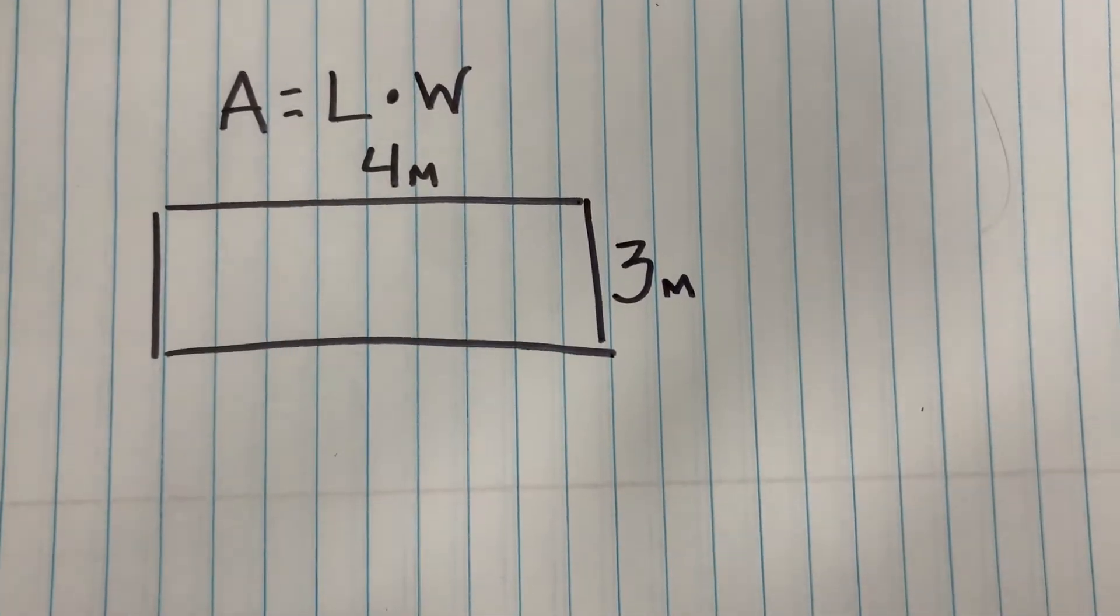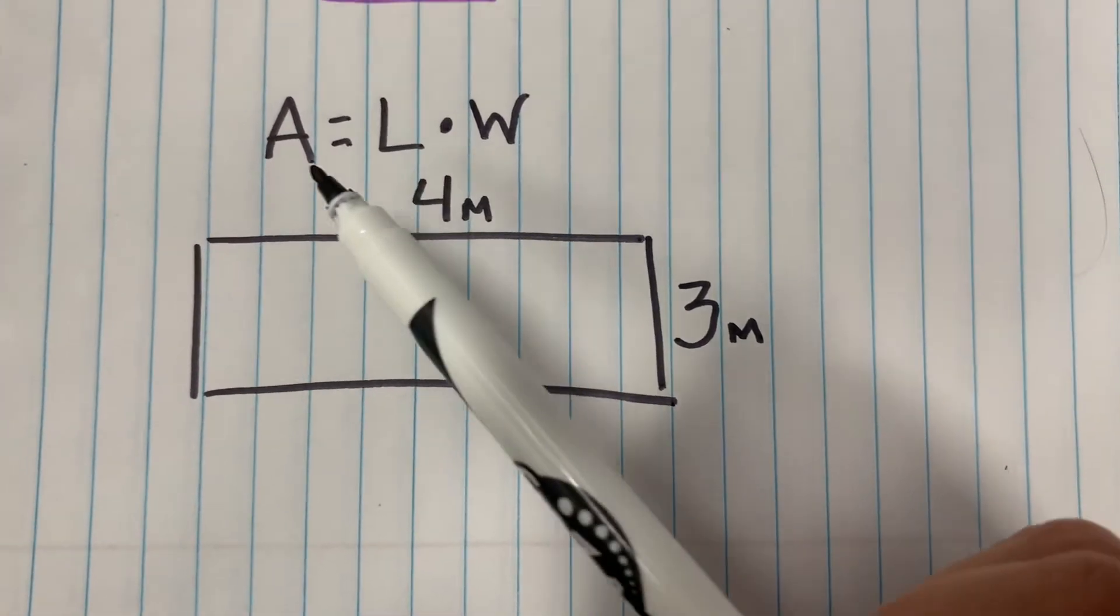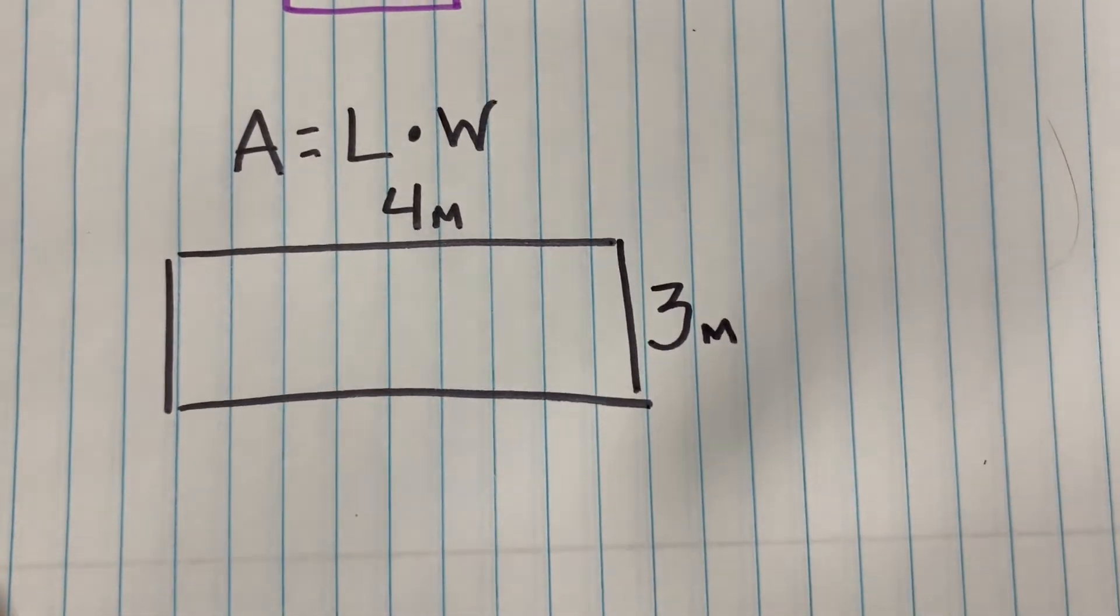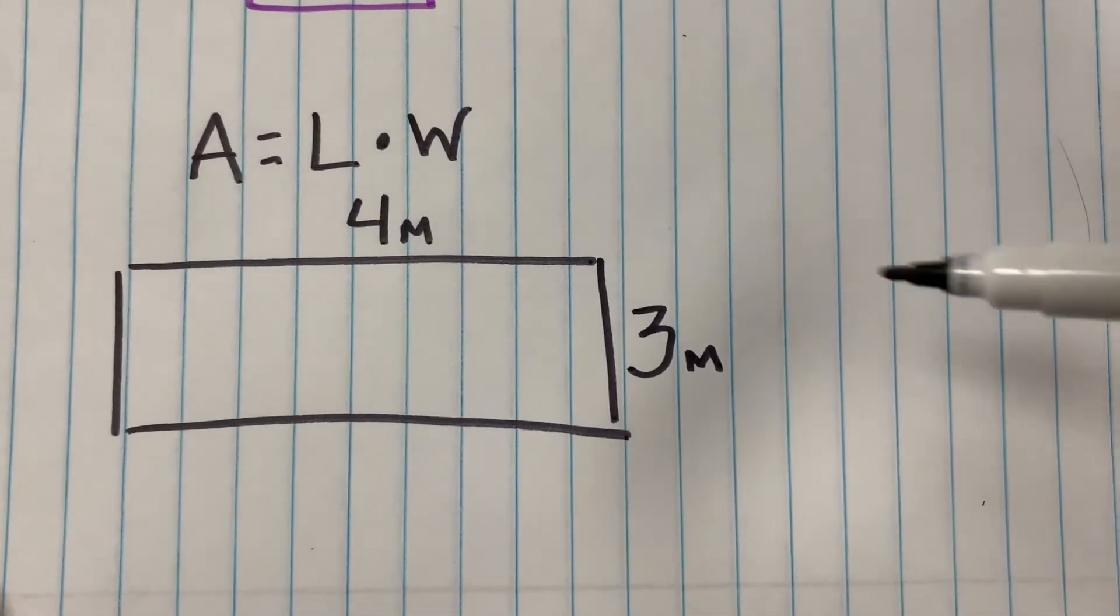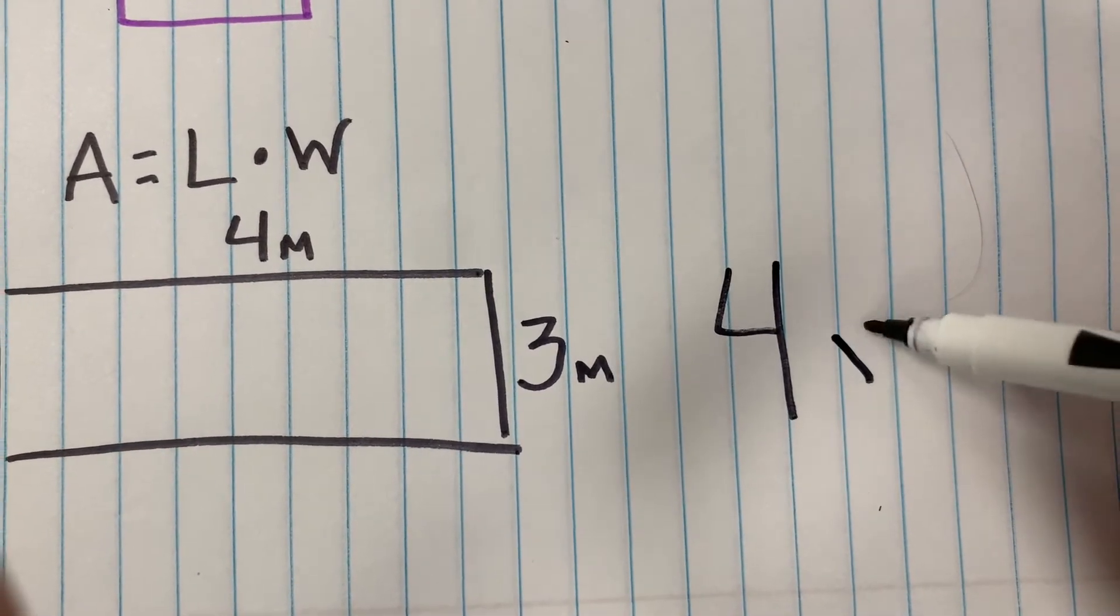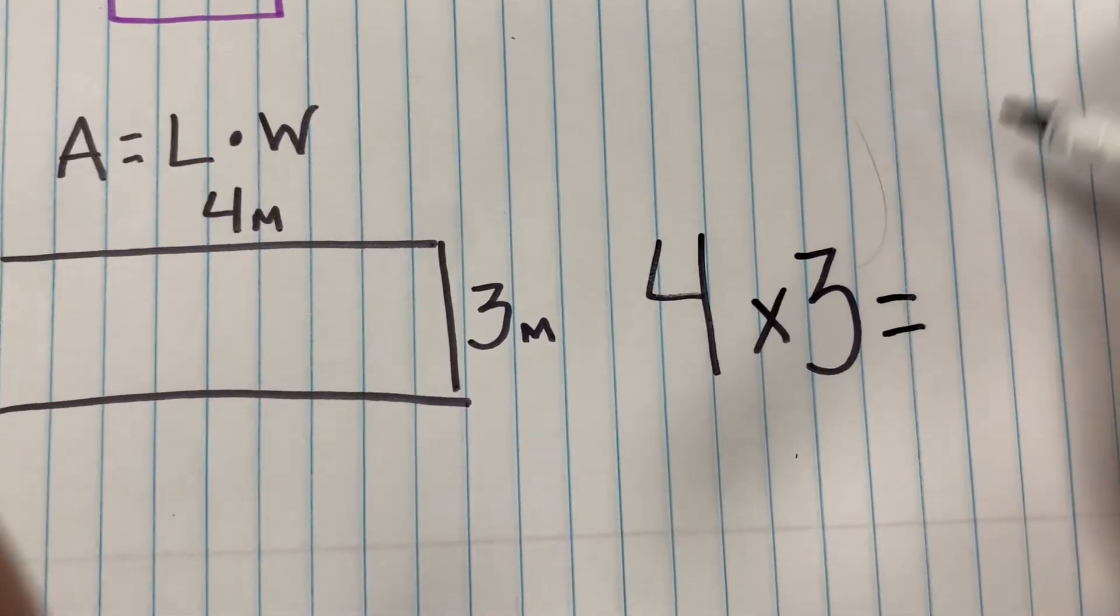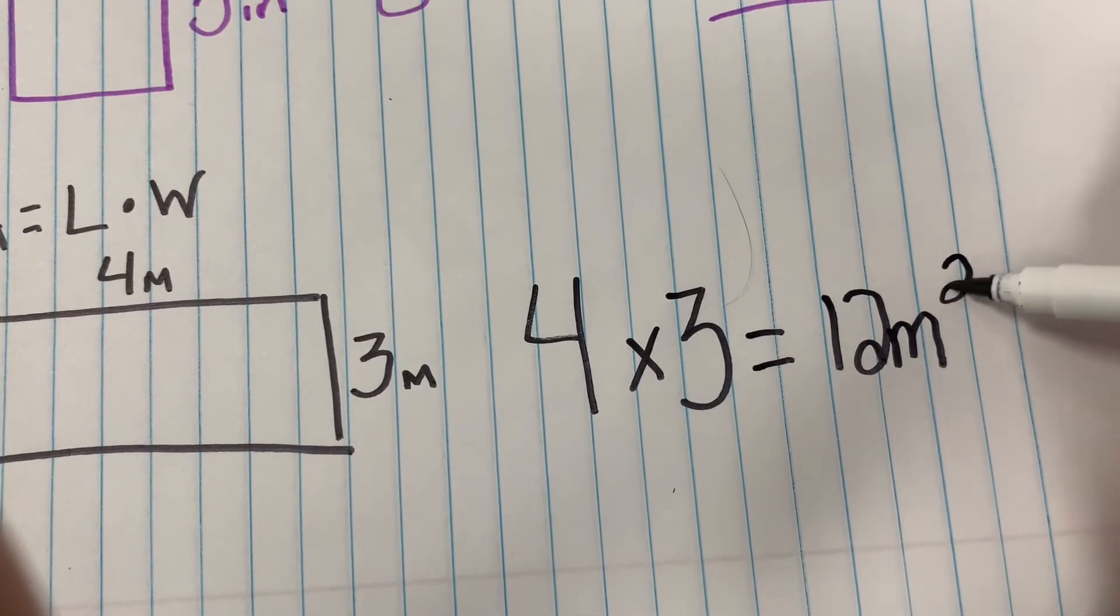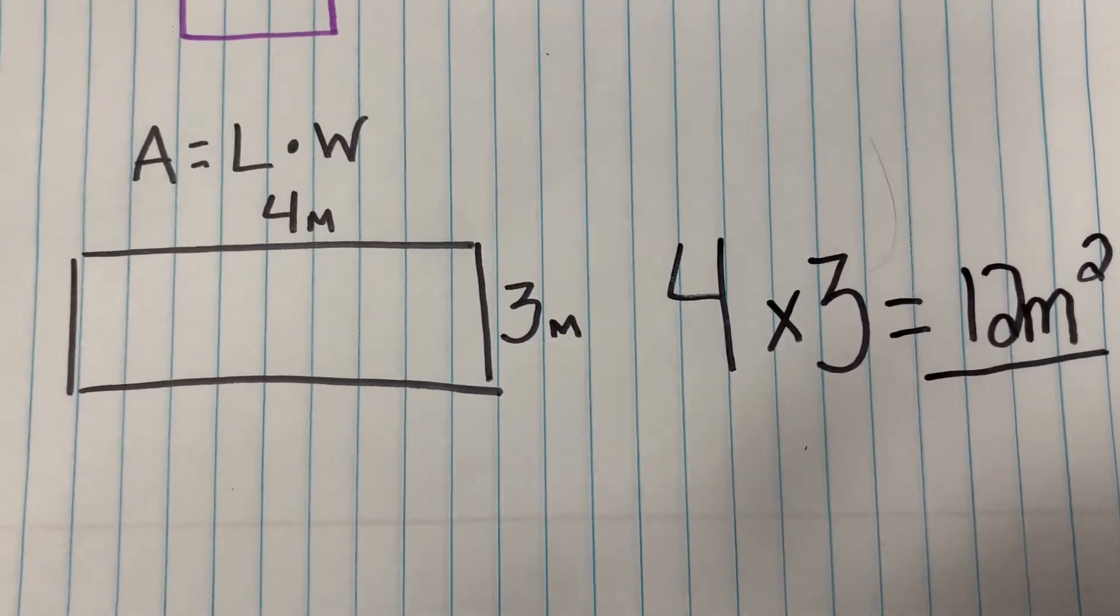As far as the area for a rectangle, it's relatively easy too. The formula is just the length times the width. For here, the length is four meters and the width is three meters. All you have to do is four times three, which gives you 12. Remember, it's meters squared. That's how you find the area for a rectangle.